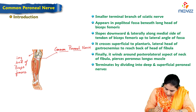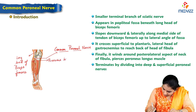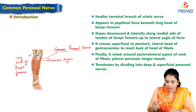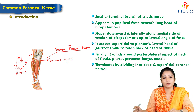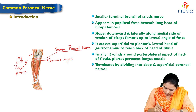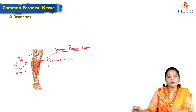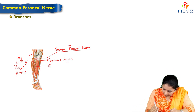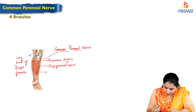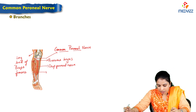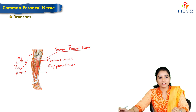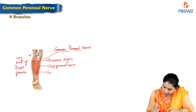Here is the point of termination and this is the peroneus longus muscle. The peroneus longus is a lateral compartment muscle of the leg. We can see the common peroneal nerve dividing into two branches. The one going into the anterior compartment is the deep peroneal nerve, and the other, which is along the lateral compartment supplying peroneus longus and brevis, is the superficial peroneal nerve.